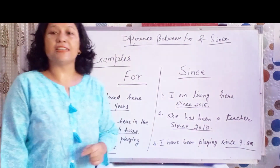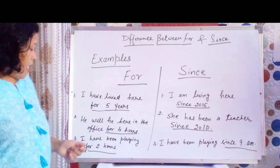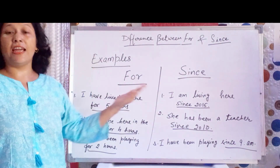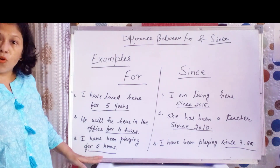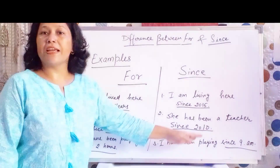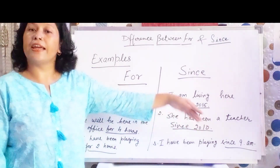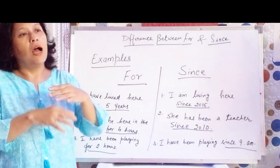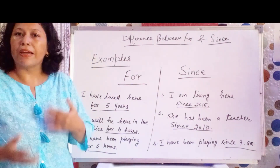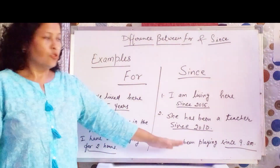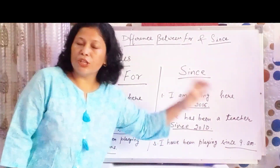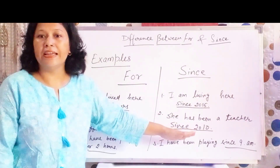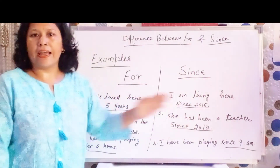'I have been playing since 9 am.' Compare this with 'I have been playing for 2 hours' — main 2 ghante tak kheel raha tha, kaun se 2 ghante hone pata nahi. 'I have been playing since 9 am' — ismein pata hai ki main 9 am se kheel raha hon. Aap chahein to 2 ghante, 3 ghante make out kar sakte ho, kab se kab tak. Yahan pe ek particular point of time bataya gaya hai ki kab action shuru hua.